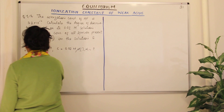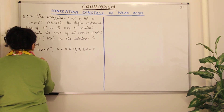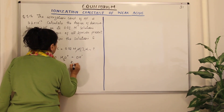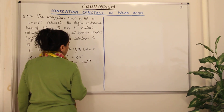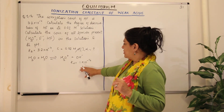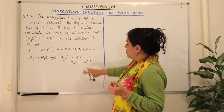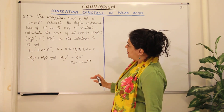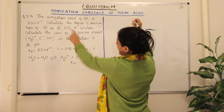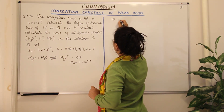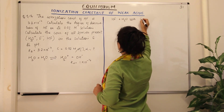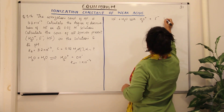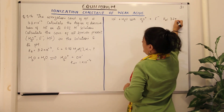The first reaction is the water autoionization: H₂O + H₂O → H3O⁺ + OH⁻, with Kw = 1×10⁻¹⁴. The second reaction is the dissociation of HF with water: HF + H₂O ⇌ H3O⁺ + F⁻, with Ka = 3.2×10⁻⁴, which is the value given to us.